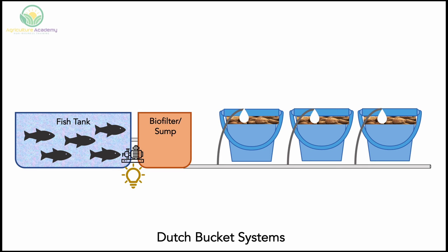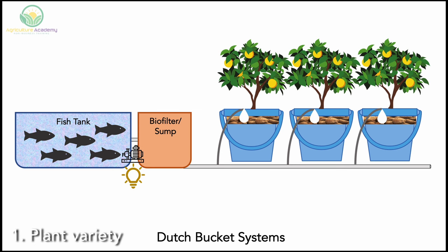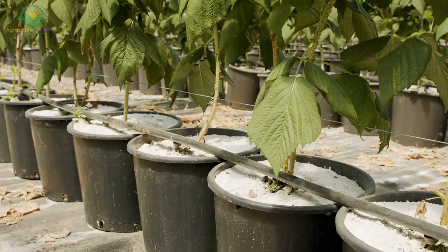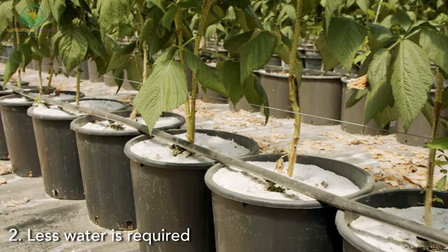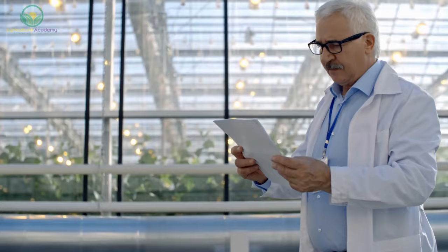With this in mind, here are some points to consider. First, there are far more types of plants to grow in a Dutch bucket system compared to the others discussed in this video. Because a single plant is grown in a bucket, you can even look at growing larger fruit trees aquaponically. Second, far less water is required, especially compared to the deep water culture system, making this a great option in regions with restricted water supply. Third, like all systems described, because the water is continuously recycled, you will need to monitor for any signs of disease infestation.